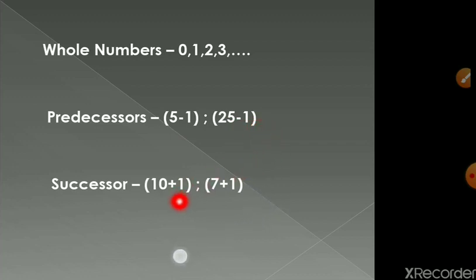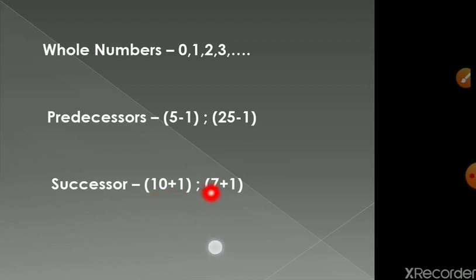Successor means one more than the given number. So the successor of 10 is 10 plus 1, that is 11, and the successor of 7 is 7 plus 1, which equals 8.